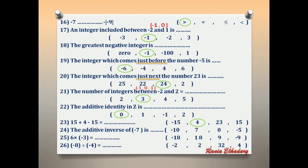Number 24: the additive inverse of negative 7 is 7. Number 25: 6 × negative 3. Positive by negative is negative. 6 × 3 = 18. The answer is negative 18.